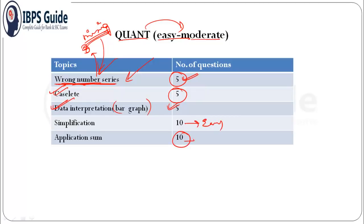And application sums - easy level, total ten questions were asked. So quant was also of easy to moderate level. Only two new topics were introduced: wrong number series and caselet DI. Let's proceed to the English section.